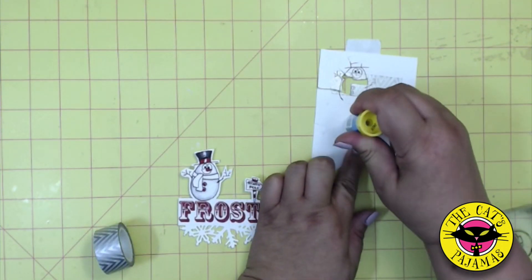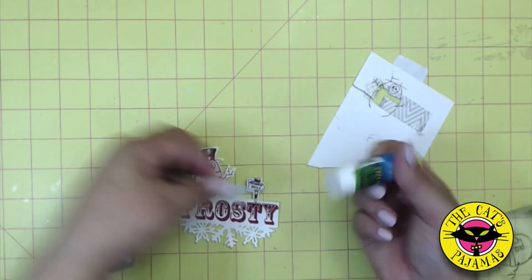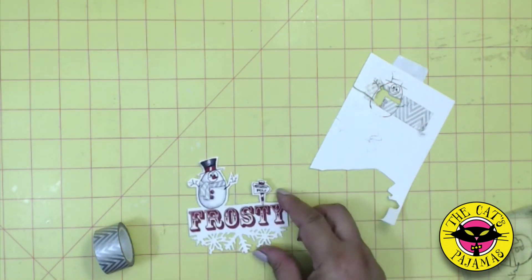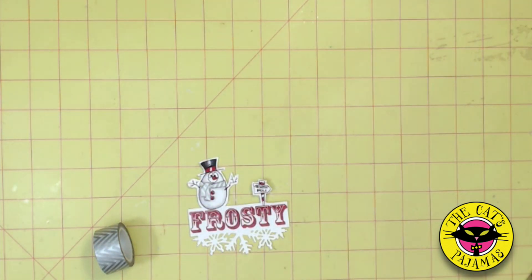I've fussy cut the scarf along the black lines. And I'm attaching the whole thing to the top of the snowman.